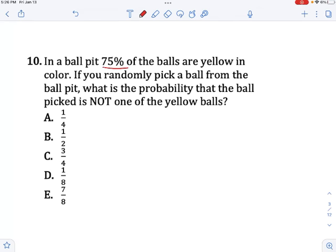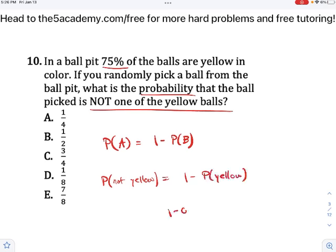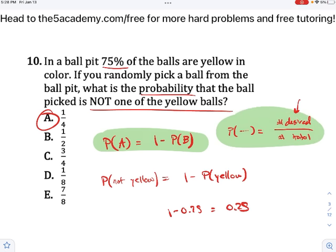In a ball pit, 75 percent of the balls are yellow. If you randomly pick a ball from the pit, what is the probability that the ball is not one of the yellow balls? Remember this formula: Probability of A is going to be 1 minus probability of B. This is when you have two possibilities. So in this case, probability of not yellow will just be 1 minus probability of yellow. And so you'll just get 1 minus 0.75, and that's going to be 0.25, which is A. You should also remember this formula right here that says that probability of any event or anything happening is the number of desired outcomes divided by the number of total outcomes. These two formulas together will cover you from just about any probability problem.